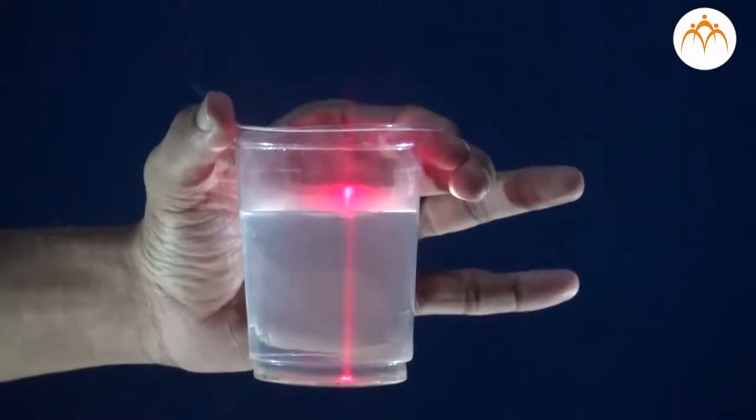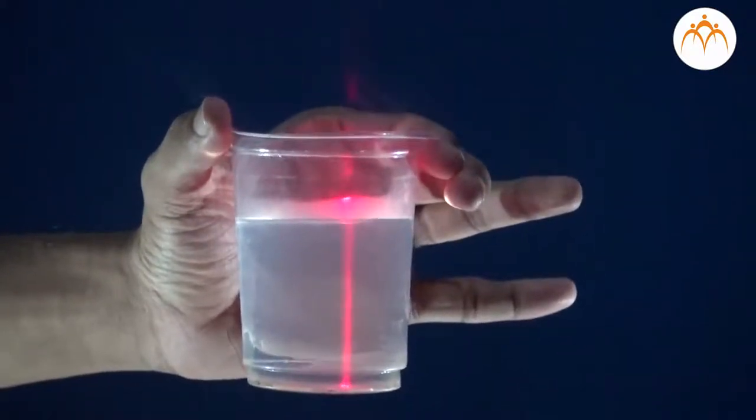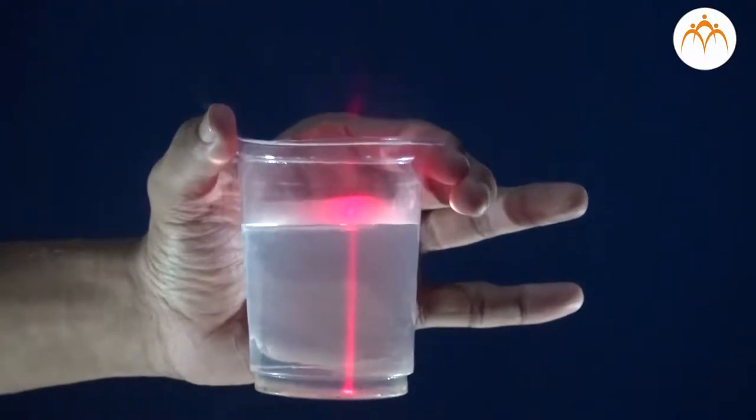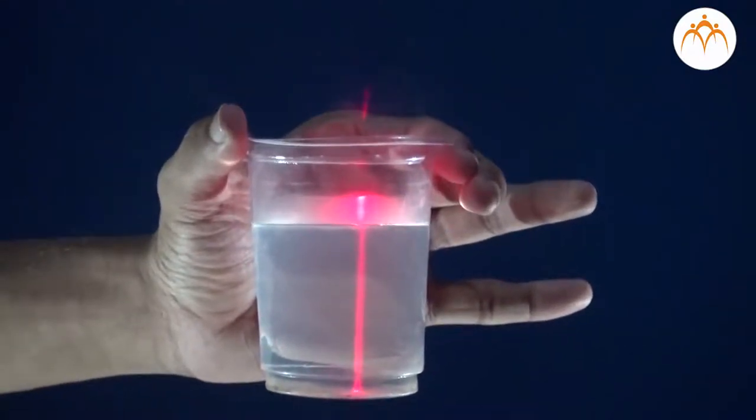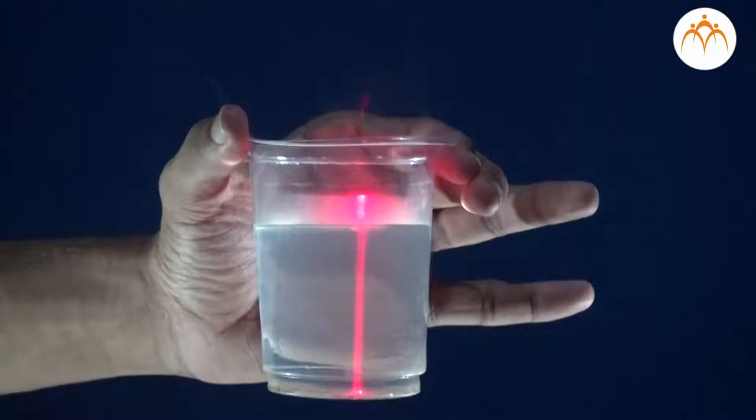This phenomenon of bending of light due to the change of medium is called refraction. This is responsible for distortion of images when seen through various types of lenses or glass objects that we are so familiar with.